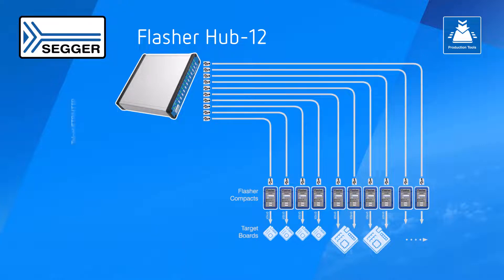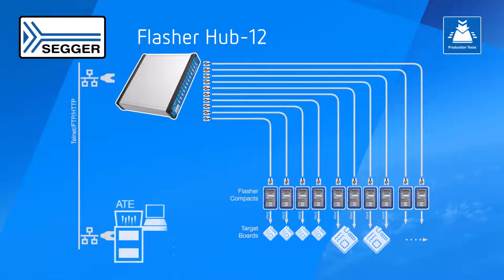Via a Telnet or Web Interface connection between Automated Test Equipment and the Flasher Hub 12, flash programming operations can be triggered and responses from the Flasher Hub 12 can be read and evaluated.